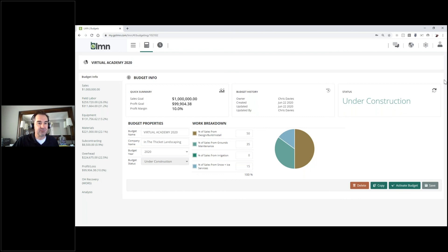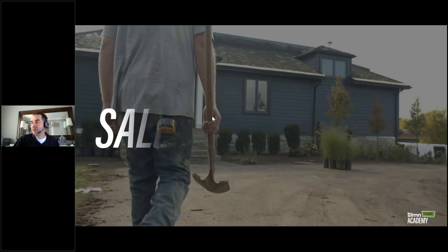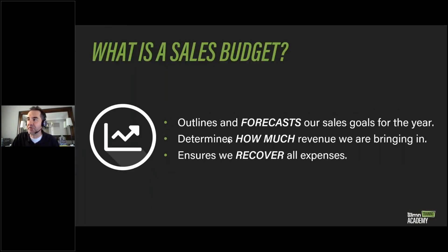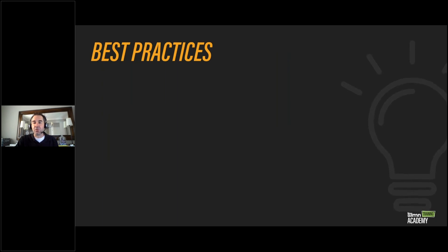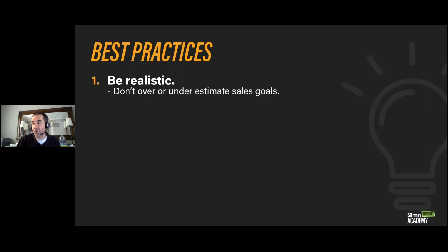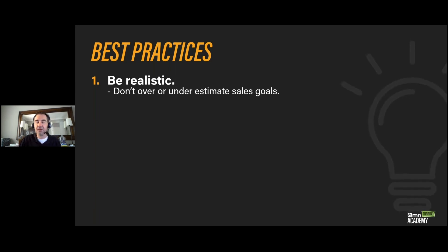Now we can move on to our sales budget. Your sales budget is where you'll outline and forecast your sales goal for the year, determine how much revenue you're bringing in, and ensure that you recover all your expenses. When setting up your sales budget, you want to make sure you're realistic — don't over or underestimate your sales goals. If you think you're going to do one point two five million dollars this year, put in one point two five million. Just put in your real numbers.